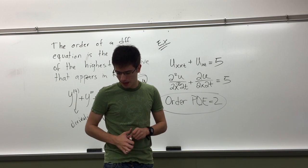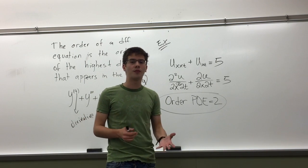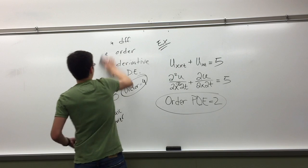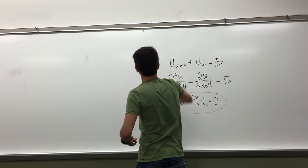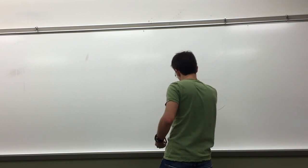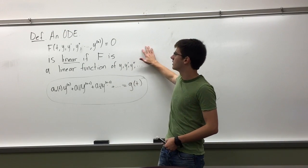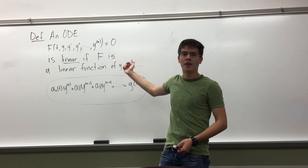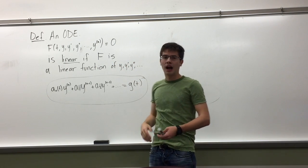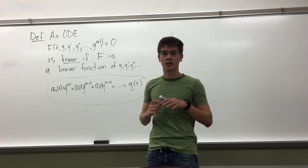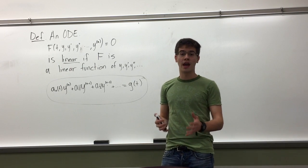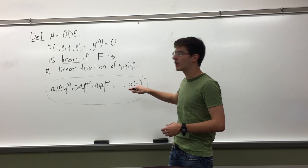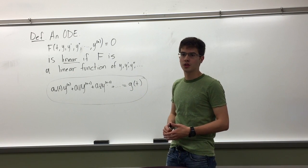Now let's talk about whether a differential equation is linear or nonlinear. The book defines linear ODEs as follows: if f is a function of t, y, y prime, y double prime equals zero, it is linear if f is a linear function. I think there's a clearer way to think about this. I'm going to explain in detail what makes a function linear versus nonlinear and how you can easily identify them. You can look at this general form and see if a function is linear or nonlinear.